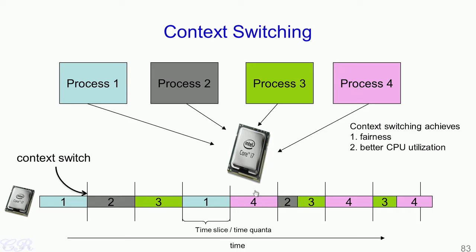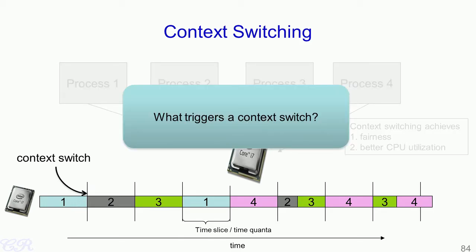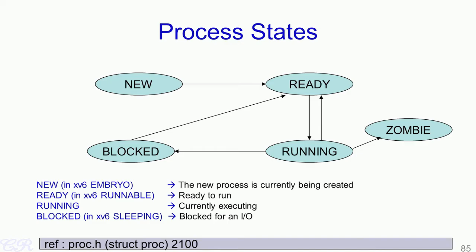For instance, process 4 executes in one time slice, then there is a period where it does not execute, and then it continues in the next time slice and so on. In this video we will see how the operating system ensures that a context switch occurs, and what triggers a context switch. To answer this we need to go back to the process state diagram, which shows the various states a process goes through from creation to exit.